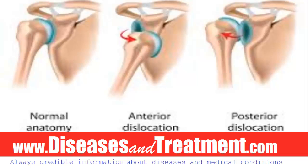The topic is dislocated shoulder, or shoulder dislocation. The shoulder joint is the most mobile joint in the body and allows the arm to move in many directions. This ability to move makes the joint inherently unstable and also makes the shoulder the most often dislocated joint in the body. In the shoulder, the head of the humerus — the upper arm bone — sits in the glenoid fossa, which is an extension of the scapula, or the shoulder blade.